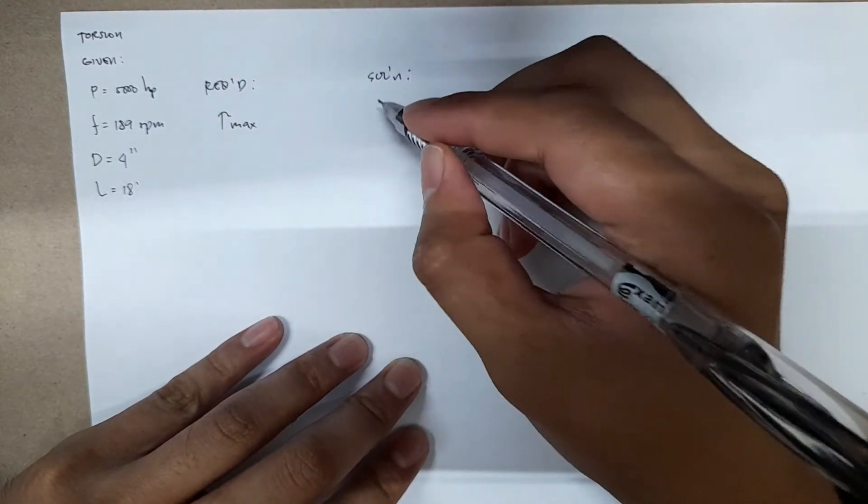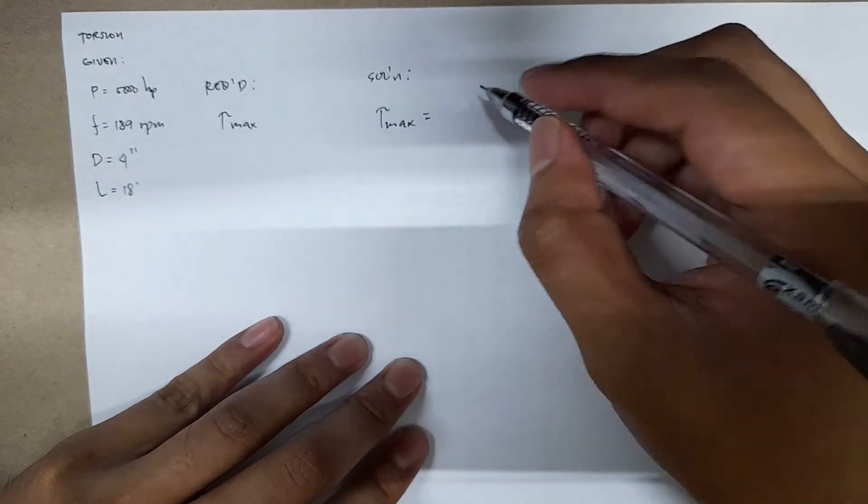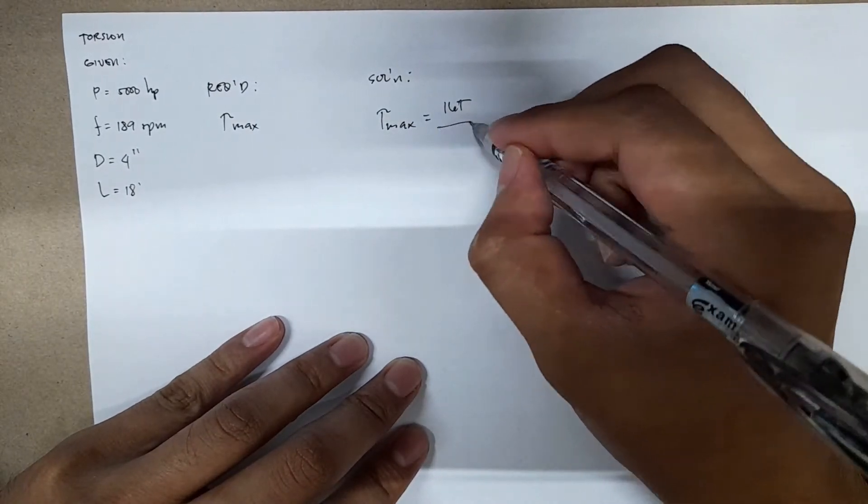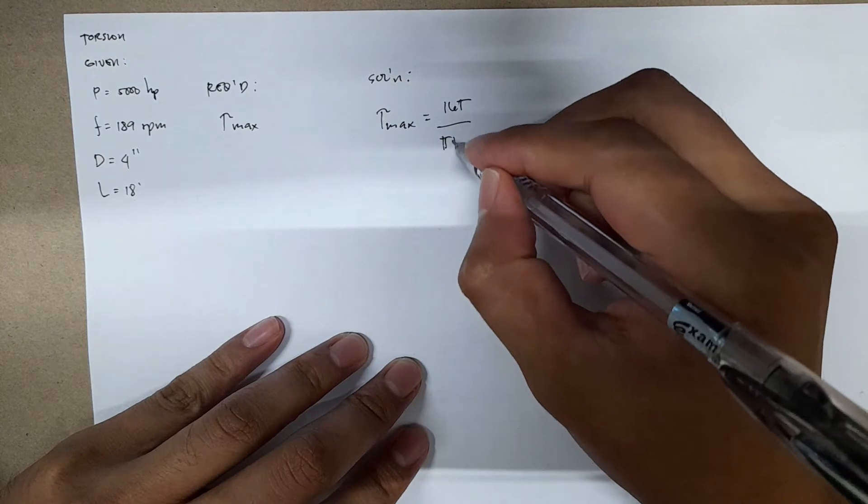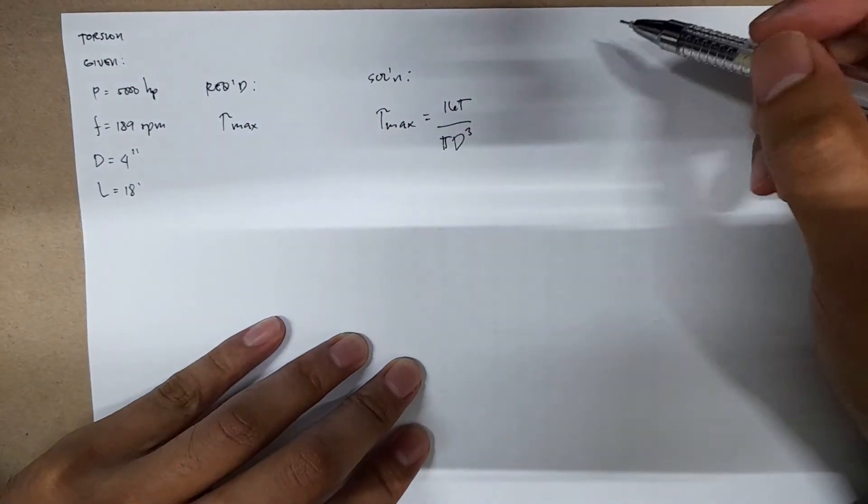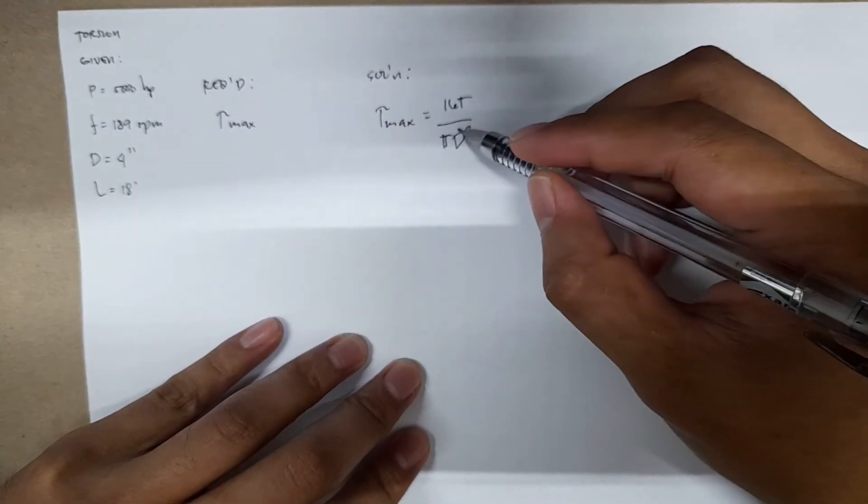Stress max is equal to 16 T divided by pi D cubed. So in this problem, the diameter is already given, but the torque is still unknown.